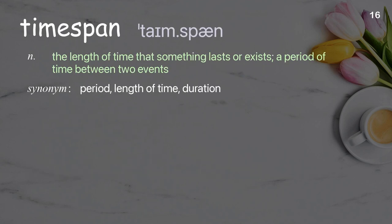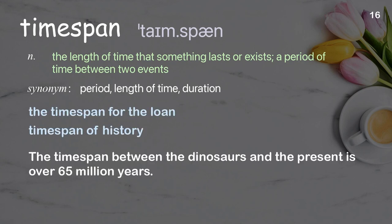Timespan: The length of time that something lasts or exists, a period of time between two events. Examples: The timespan for the loan, timespan of history. The timespan between the dinosaurs and the present is over 65 million years.